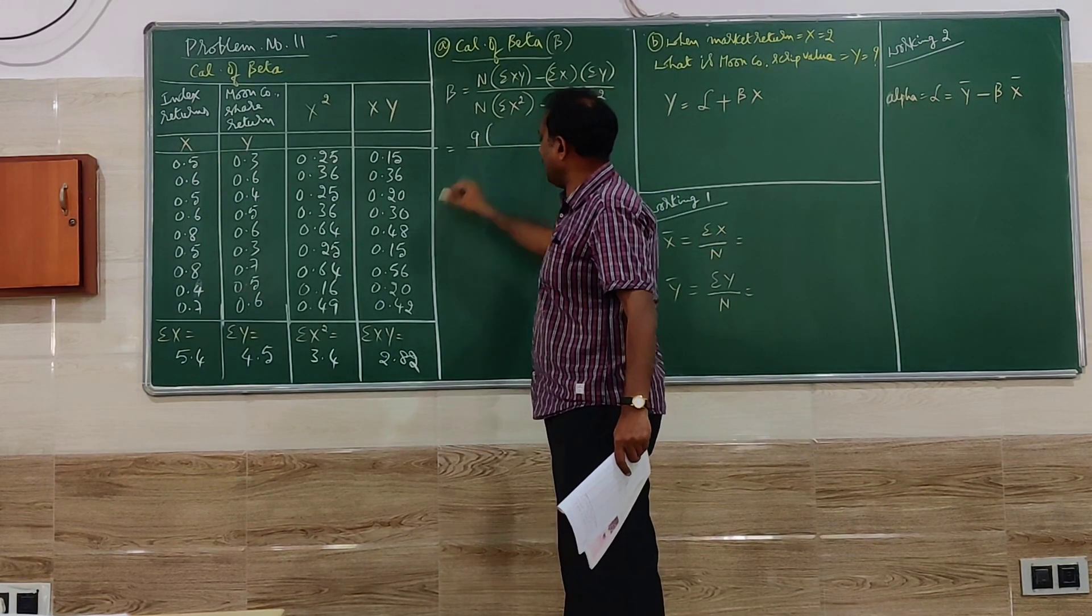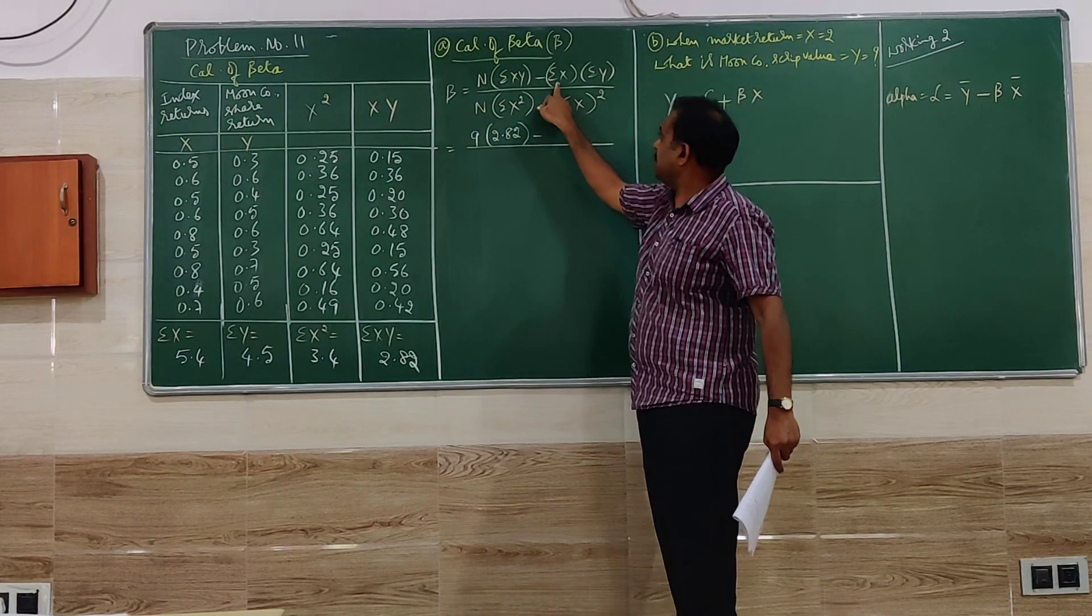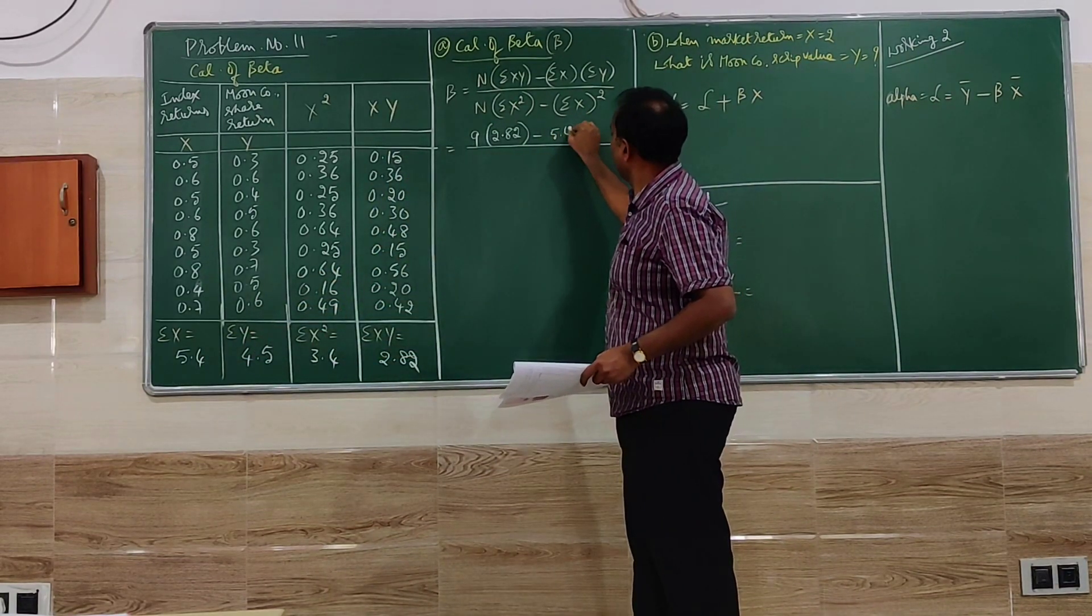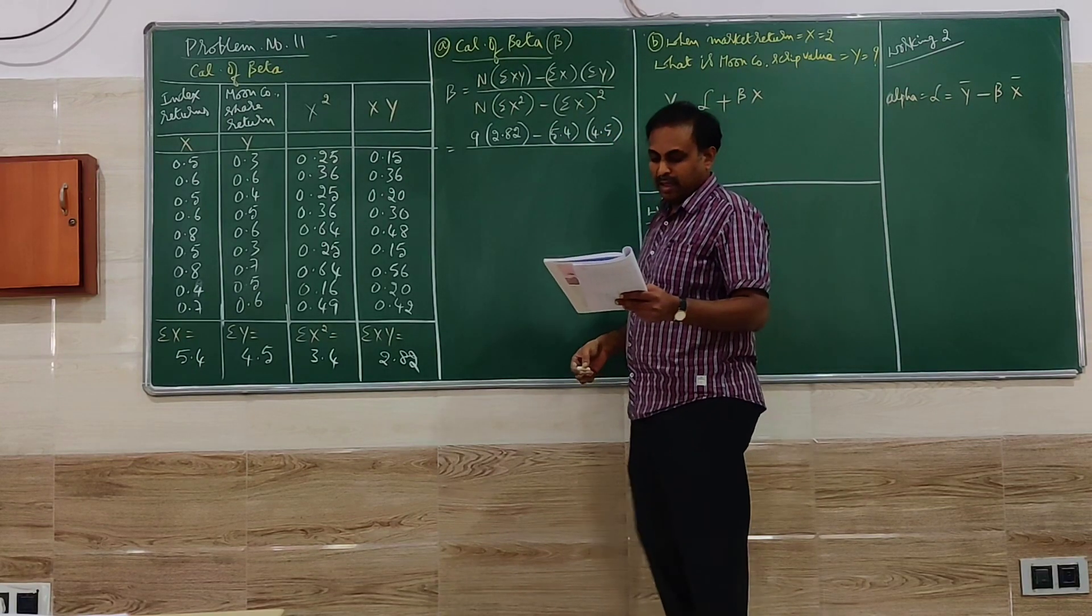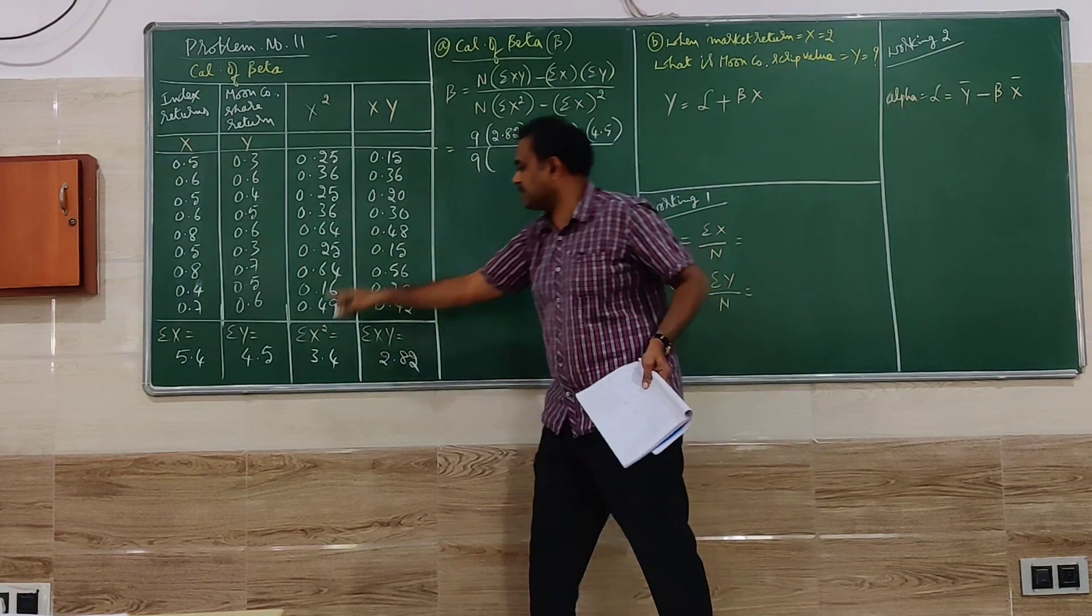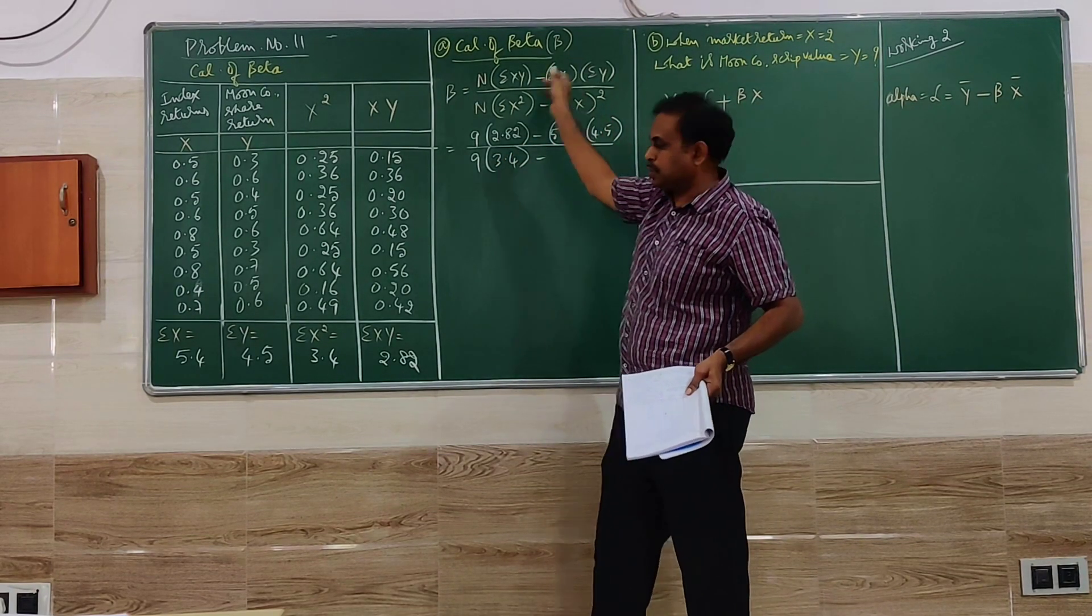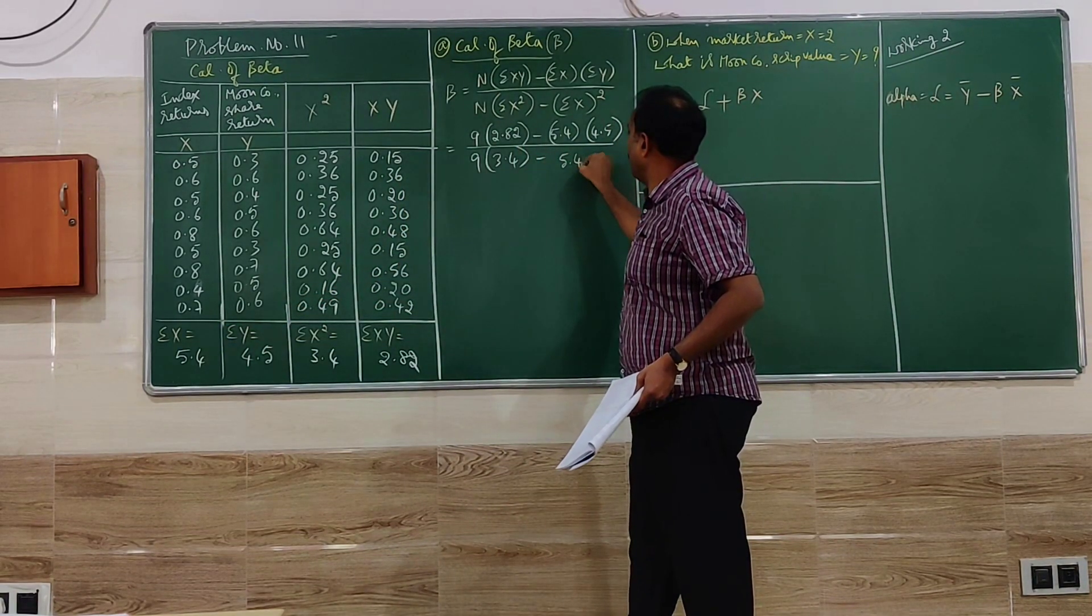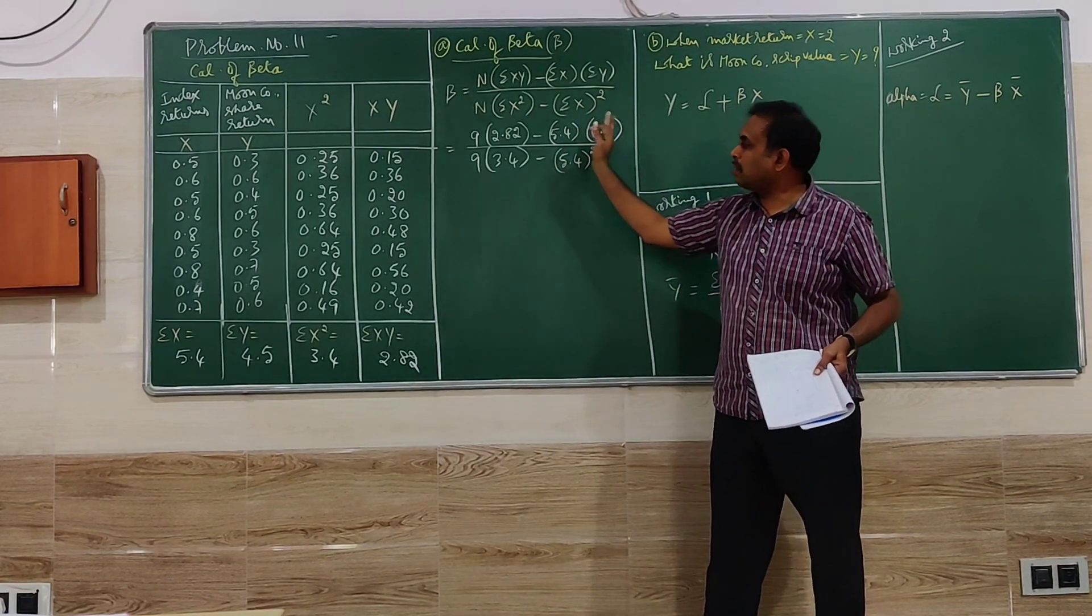We have to multiply that with summation XY minus summation X into summation Y: 5.4 multiplied by 4.5. Next, divided by N, N is 9, summation X square multiplied with 3.4 minus summation X whole square. Summation X is 5.4 whole square. Then check once if the values are right.